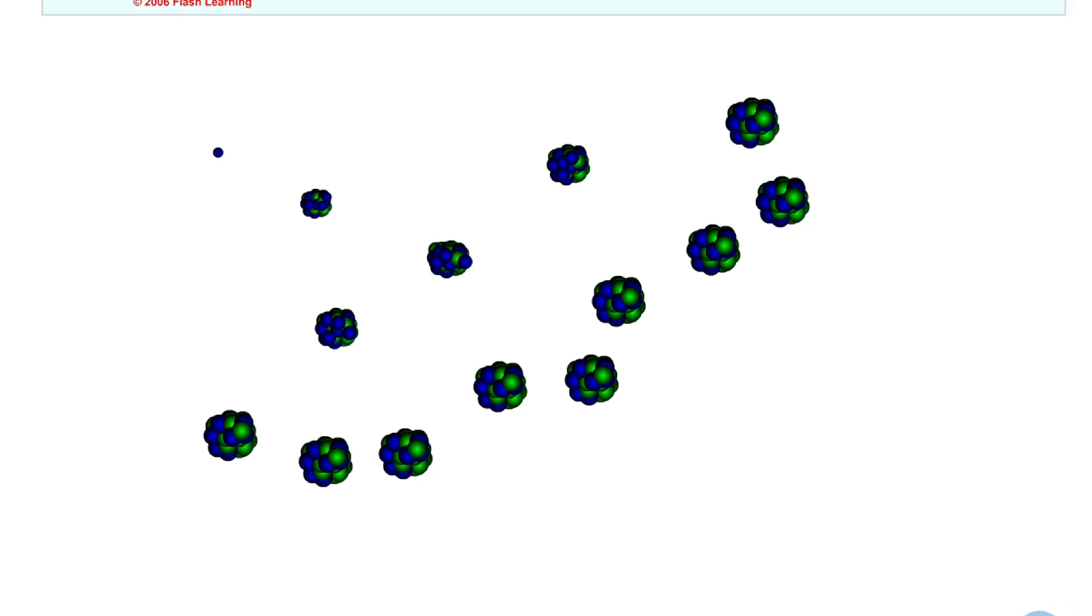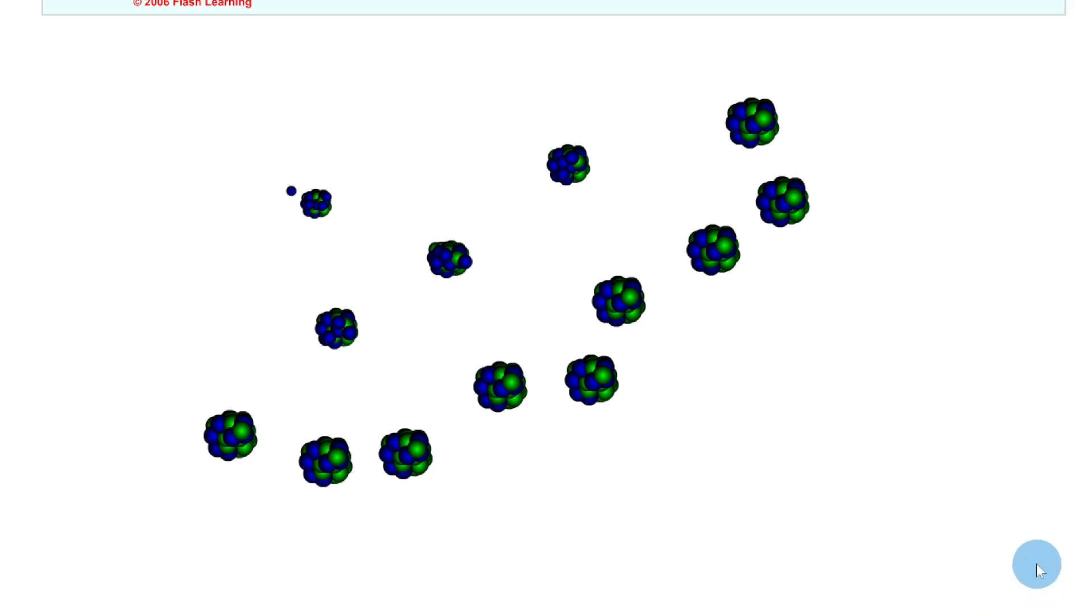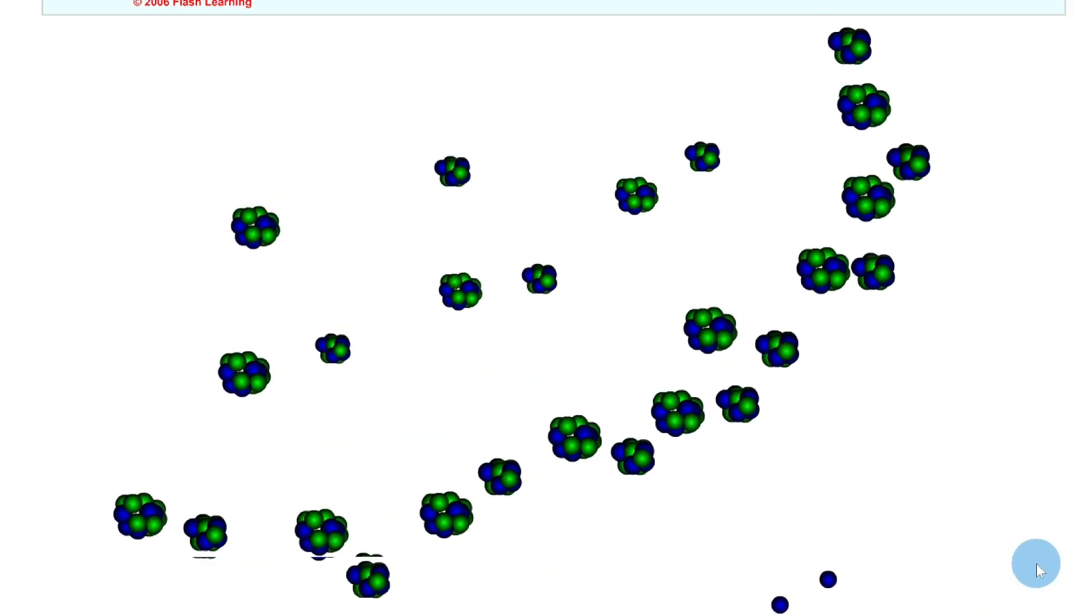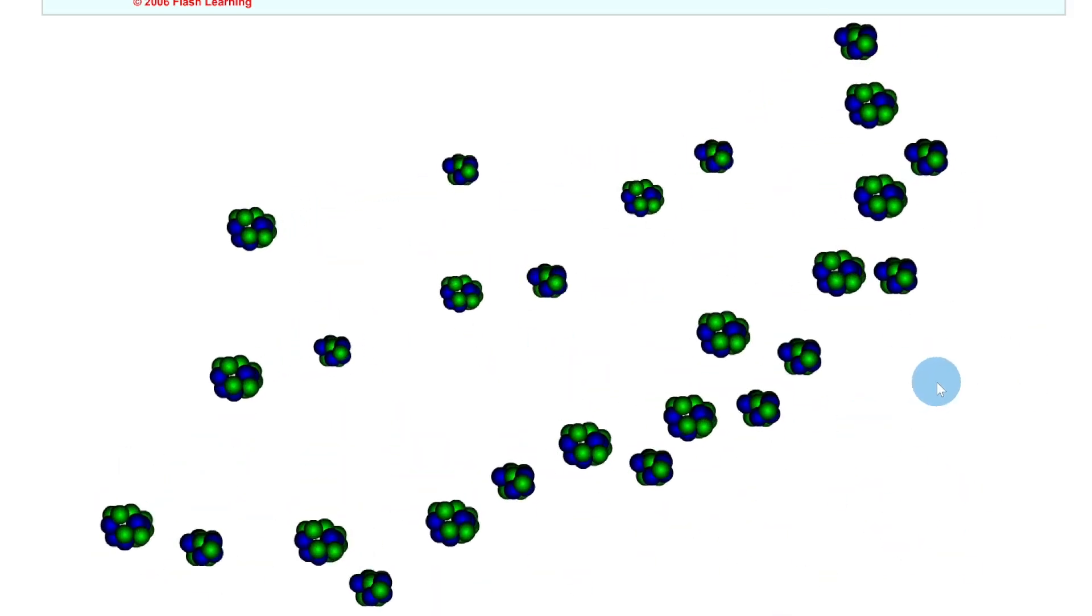So if we click play here, you'll see the chain reaction taking place. And just to show you that again, so you'll see that at each stage the number of neutrons being released is being multiplied and the amount of energy being released is also going to increase there.